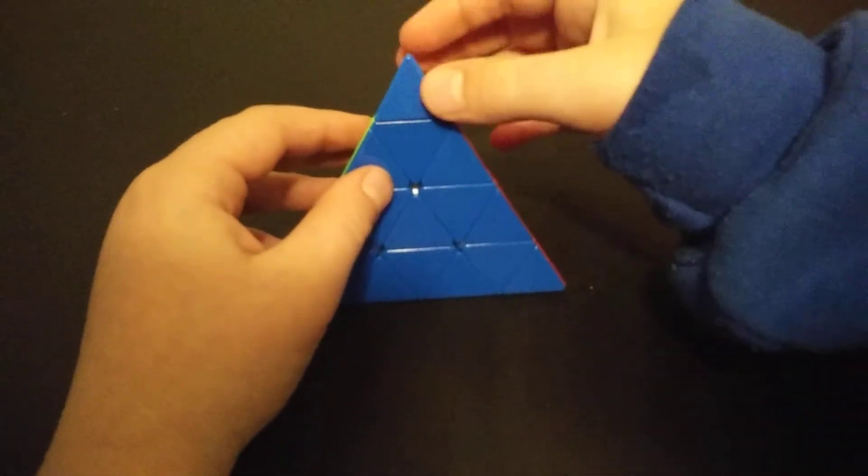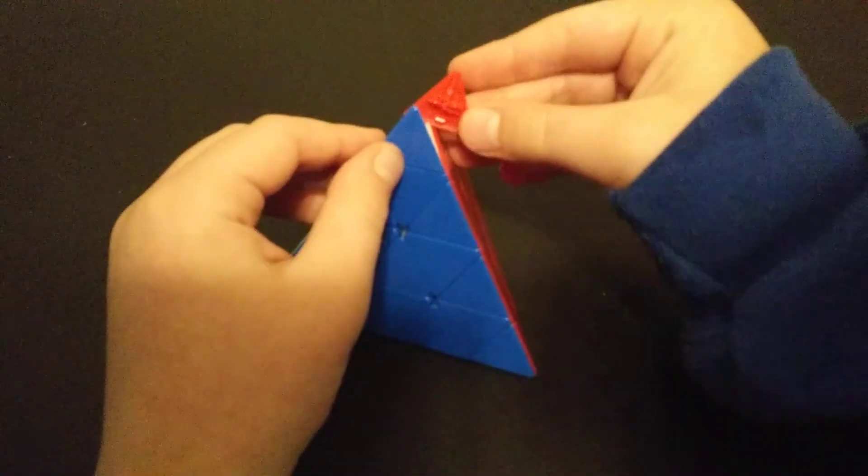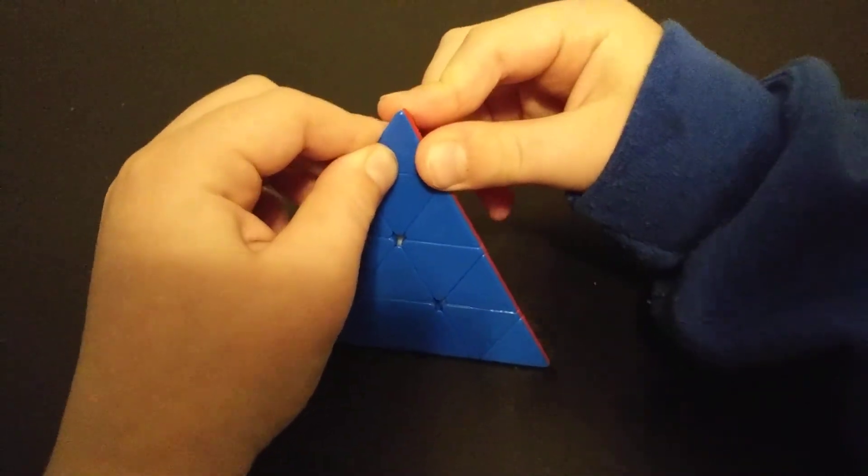There you go. A little bit wobbly, but that's fine. And then you take this, same thing. Ridge goes in the hole. Like that.